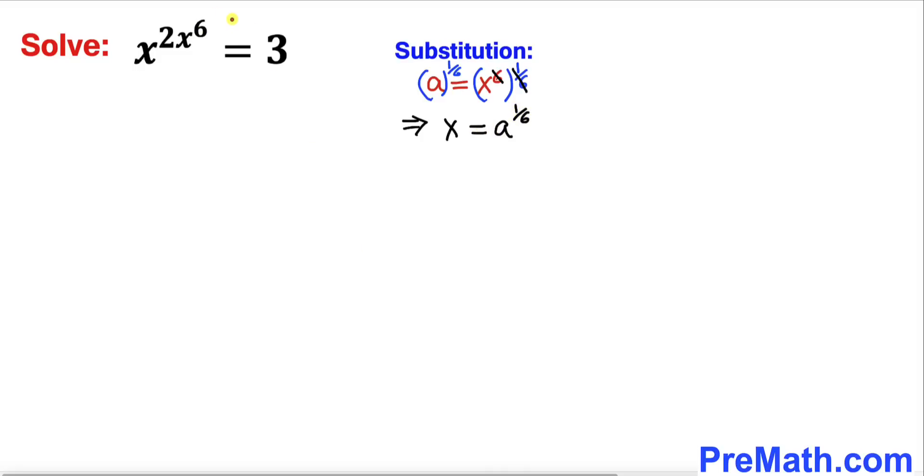And now let's focus back on this our original equation. I am going to now replace this x by a power 1 over 6 and this x power 6 we already assumed that this is equal to an a.